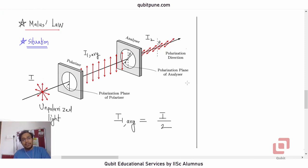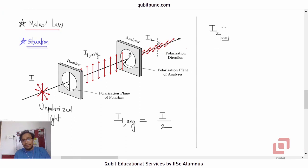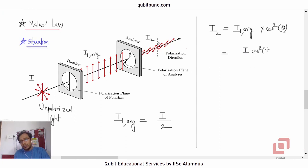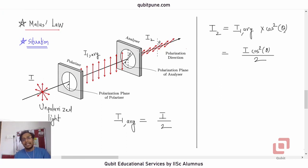The intensity of the plane-polarized light will be half of the original intensity, because the average value of cos²θ over 0 to π is 1/2. Malus' law tells us that if you allow this plane-polarized light to pass through an analyzer whose polarizing axis makes angle θ with the first polarizer, the intensity of the emergent wave will be I₁_avg × cos²θ, or I·cos²θ / 2 if I is the intensity of the unpolarized light.